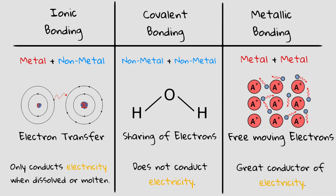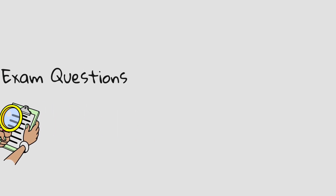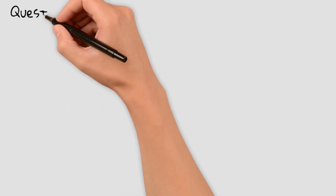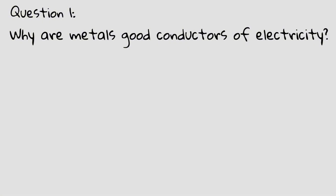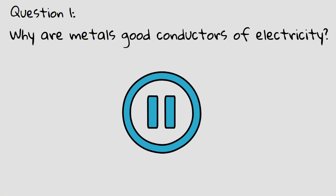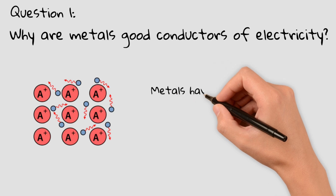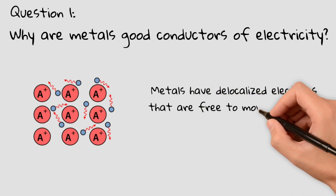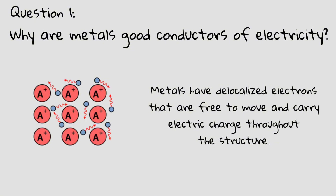For more information about ionic and covalent bonding, check out my other videos. Now let's test your understanding with two IGCSE-style exam questions. Question 1: Why are metals good conductors of electricity? The answer: metals have delocalized electrons that are free to move and can carry electric charge throughout the structure, allowing electricity to pass through easily.